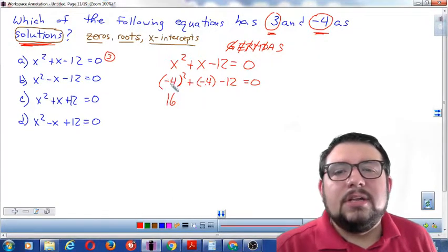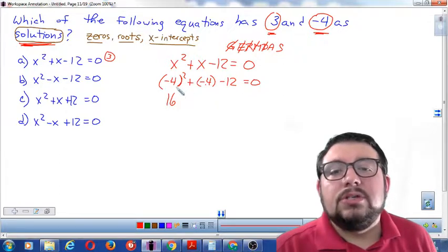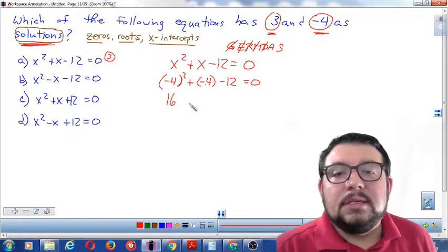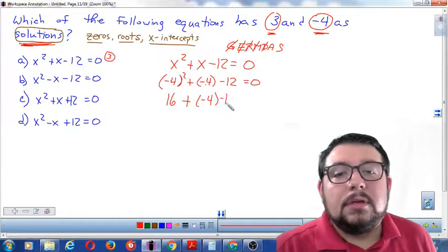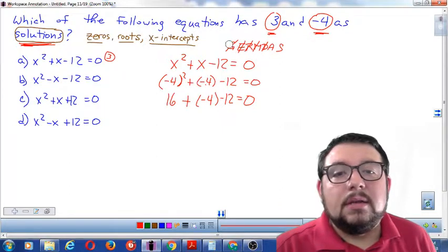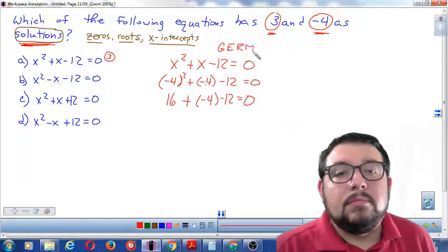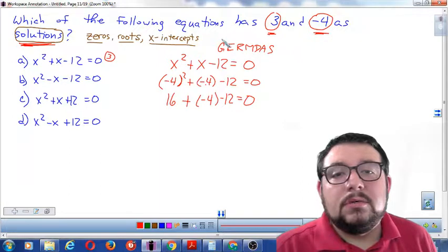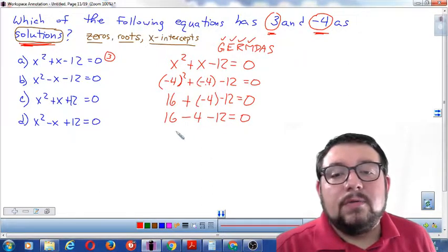As long as it's all multiplication, negative 4 times negative 4 makes 16. And plus negative 4, negative 12 equals 0. Now we're going to go down our GERMDAS chart again. Groupings are done, exponents are done, square roots none, multiplying yes, there's a parenthesis here. So I need to multiply. Positive times negative makes negative. The number part stays the same. 16 minus 4 is 12.